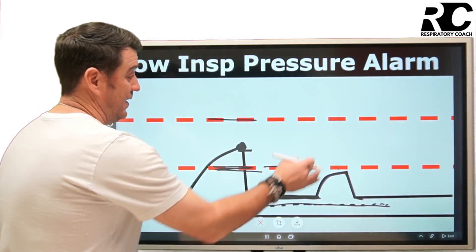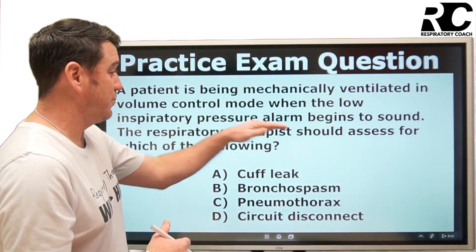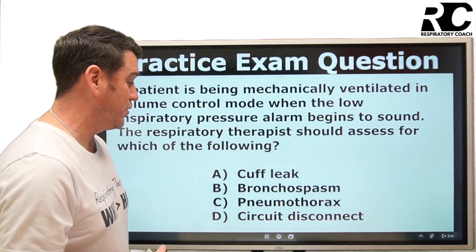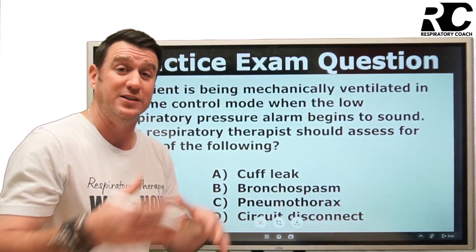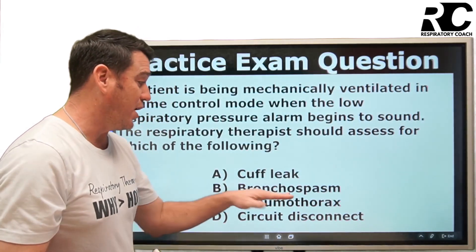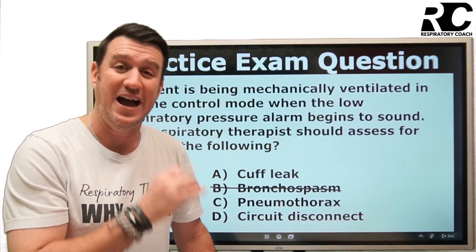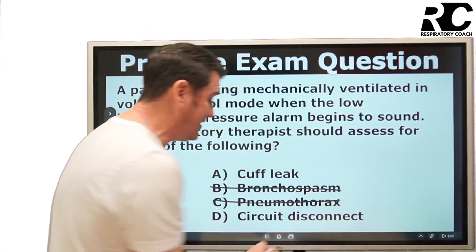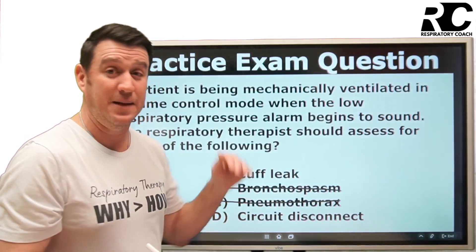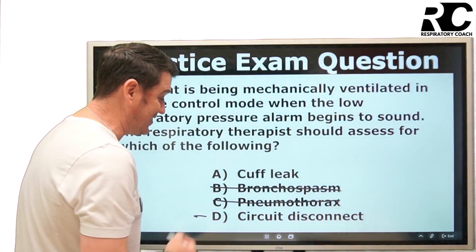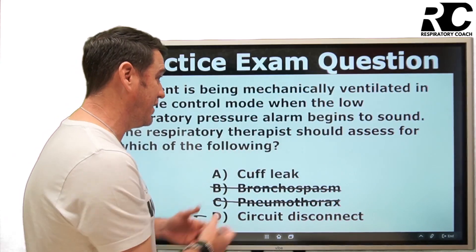Returning to our practice exam question: a patient is ventilated and the low inspiratory pressure alarm begins to sound — which should you assess for? Answer A: cuff leak — yes, we know that is a potential cause of a low inspiratory pressure alarm. Answer B: bronchospasm — bronchospasm will not cause a low inspiratory pressure alarm; it's more likely to cause a high inspiratory pressure alarm. Answer C: pneumothorax — that decreases compliance, which increases pressures, making it more likely to cause a high inspiratory pressure alarm, not a low one.